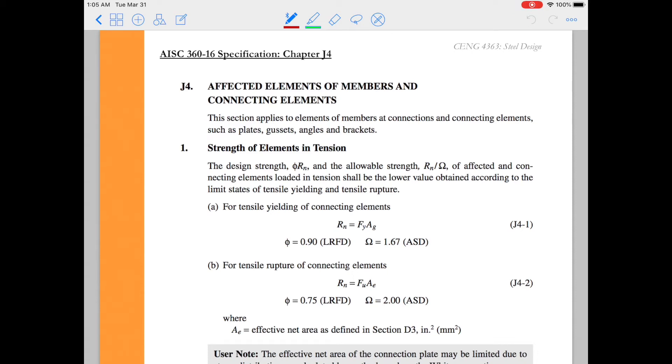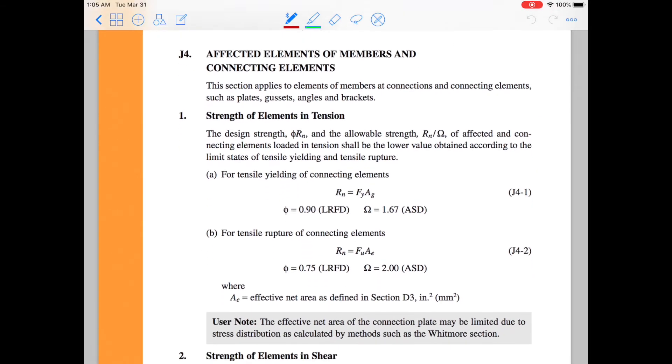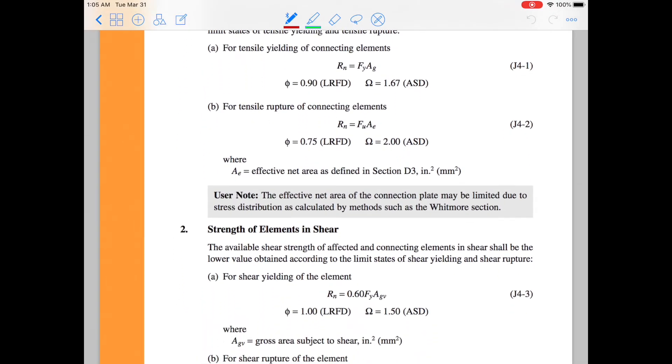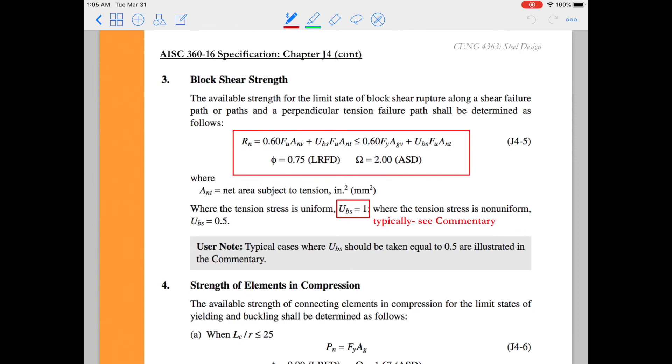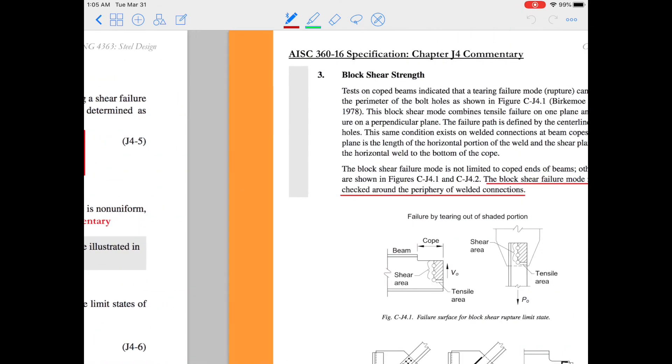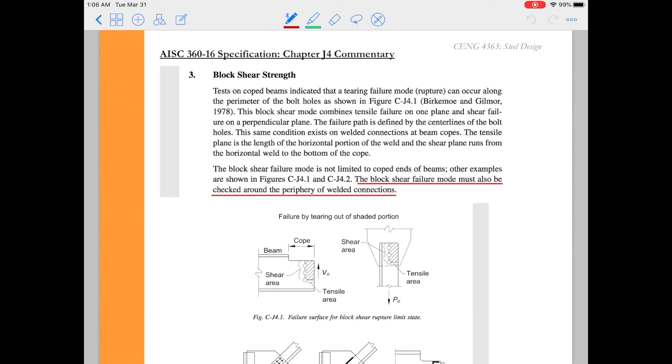So let's take a look at the specification. Block shear is found in Chapter J. So this is J Section 4, Affected Elements of Members and Connecting Elements. I will see here, we have J 4.1, Strength of Elements in Tension once again, and Strength of Elements in Shear. And we've been through this for kind of our tension member limit states, but this just reiterates what those are. Block shear is a combination of tension and shear, so it kind of takes those elements from 1 and 2 and puts them together into J 4.3. And you can see here the formula for block shear that we had written previously in our notes. Again, typically UBS will be 1 for most applications, and it says right there to go see the commentary for other cases when UBS is not 1.0.